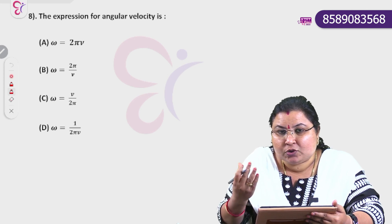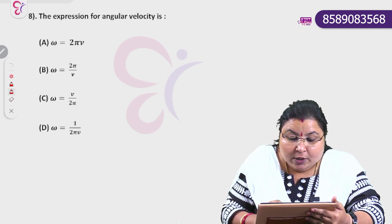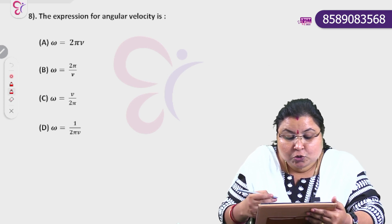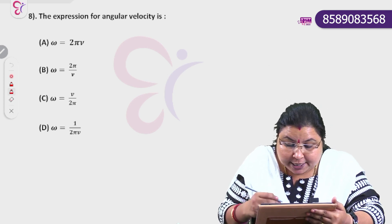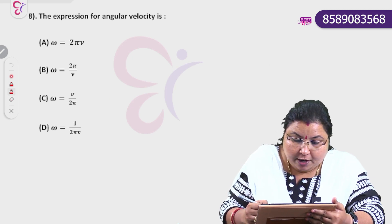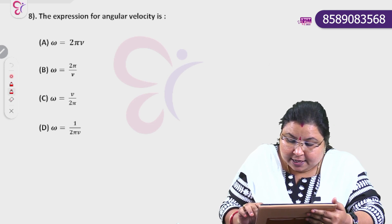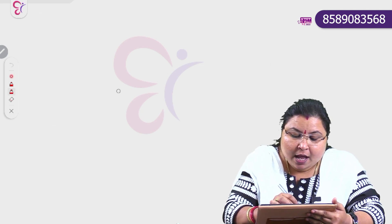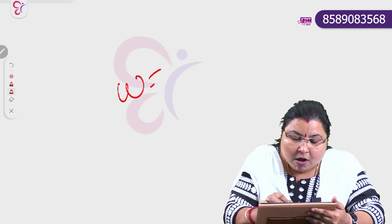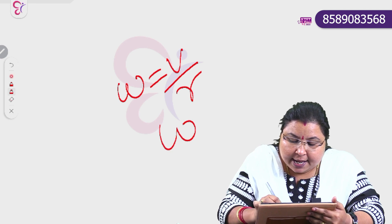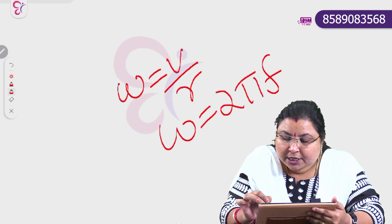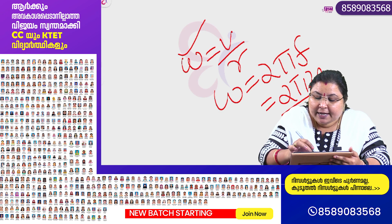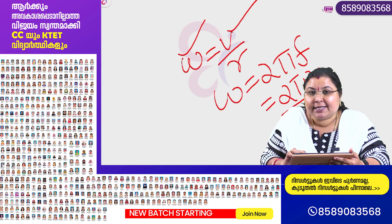What is the expression for angular velocity? Omega is equal to 2 pi nu. The correct answer is omega equals 2 pi nu. Also, omega is equal to V by R. We call it the linear velocity equation where omega equals 2 pi into nu.